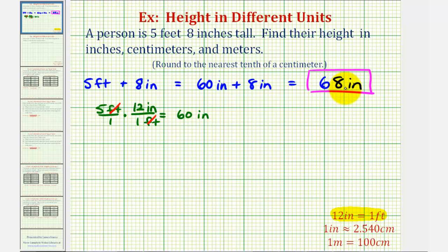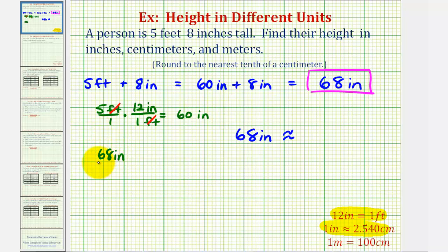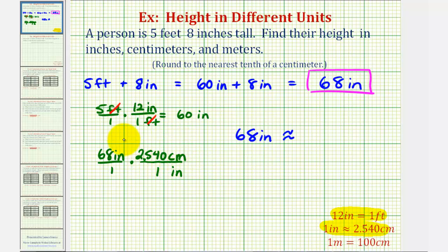So now we'll convert sixty-eight inches to centimeters, using the conversion that one inch is approximately equal to two point five four zero centimeters. We want to find approximately how many centimeters equals sixty-eight inches, and we are asked to round to the nearest tenth of a centimeter. Again, we'll do this conversion using unit fractions. So we'll start with sixty-eight inches, write it as sixty-eight inches over one, and multiply by a unit fraction. We want inches to simplify out of the product, therefore inches must be in the denominator and centimeters must be in the numerator, using two point five four zero centimeters. Notice that the units of inches simplify out, so this product will give us our conversion.